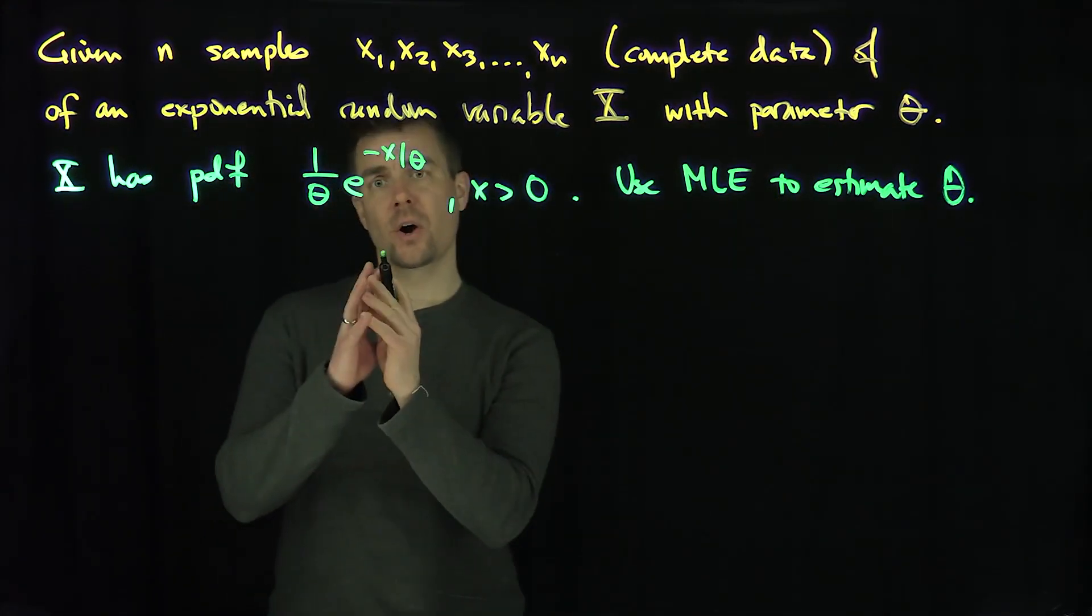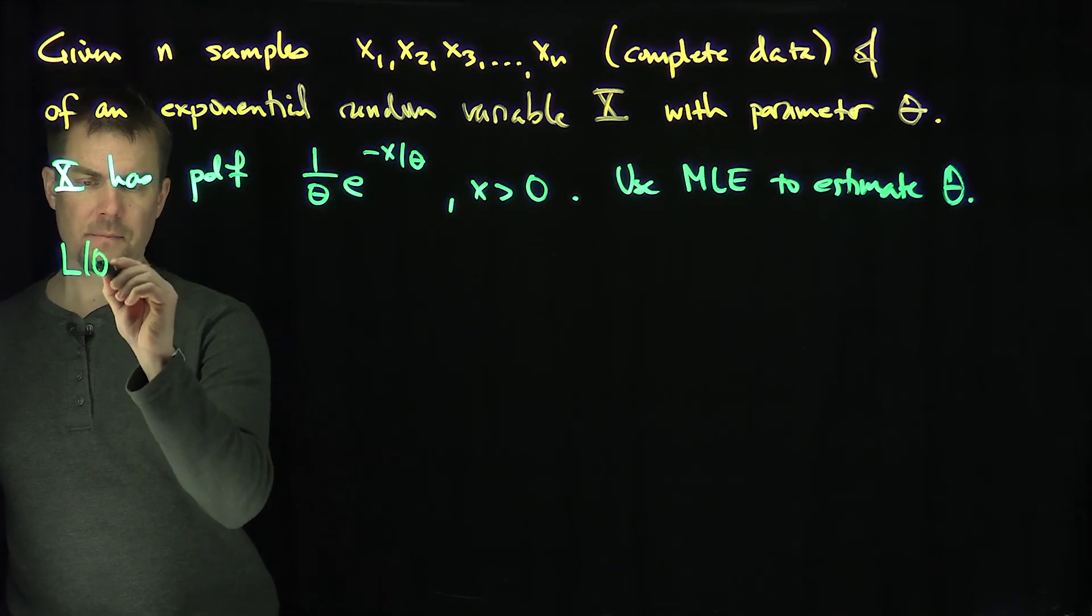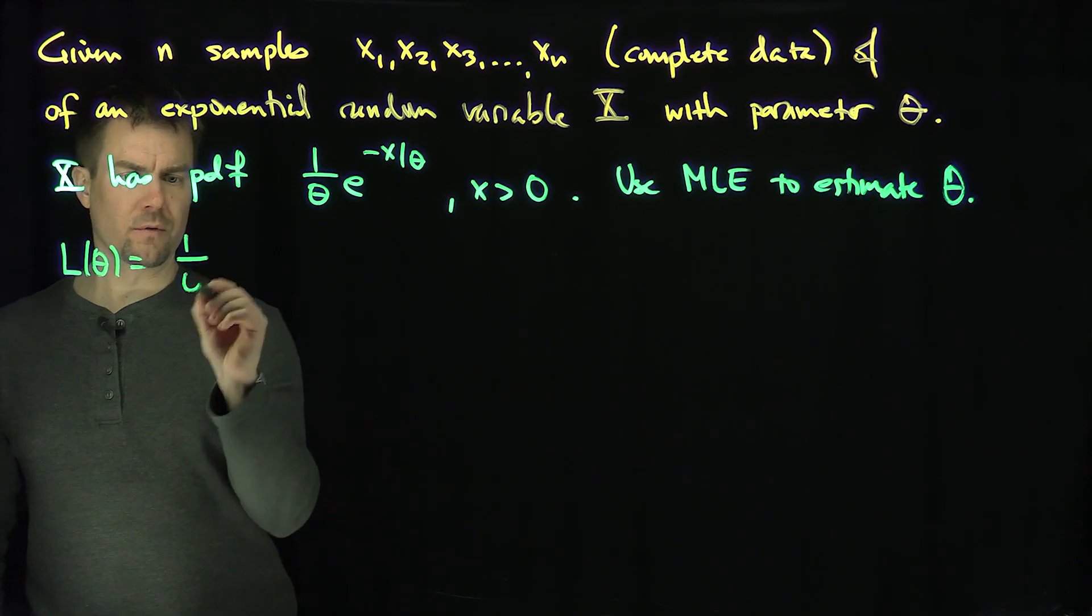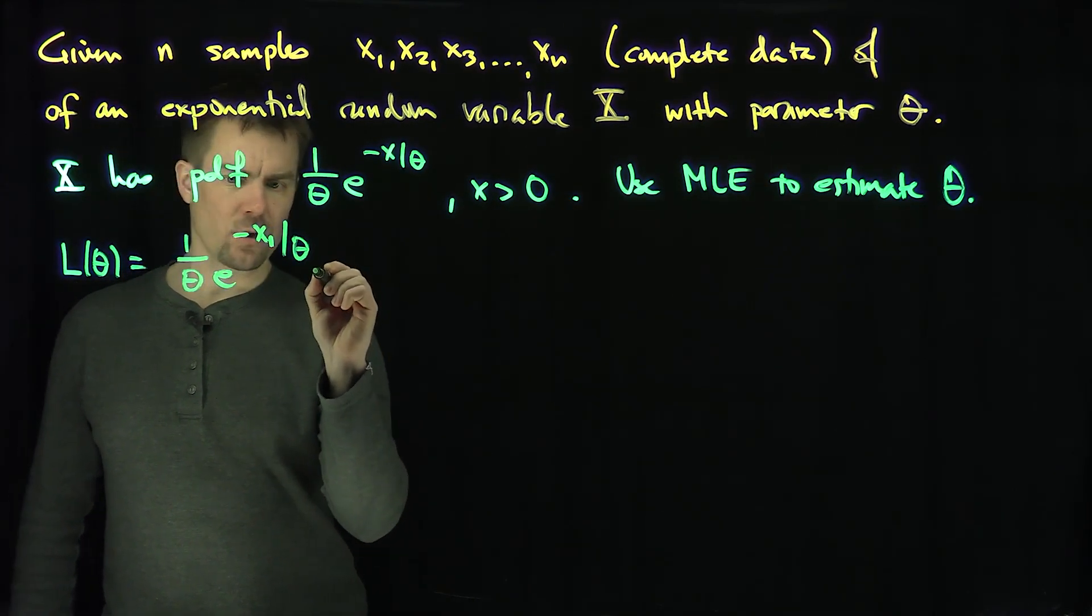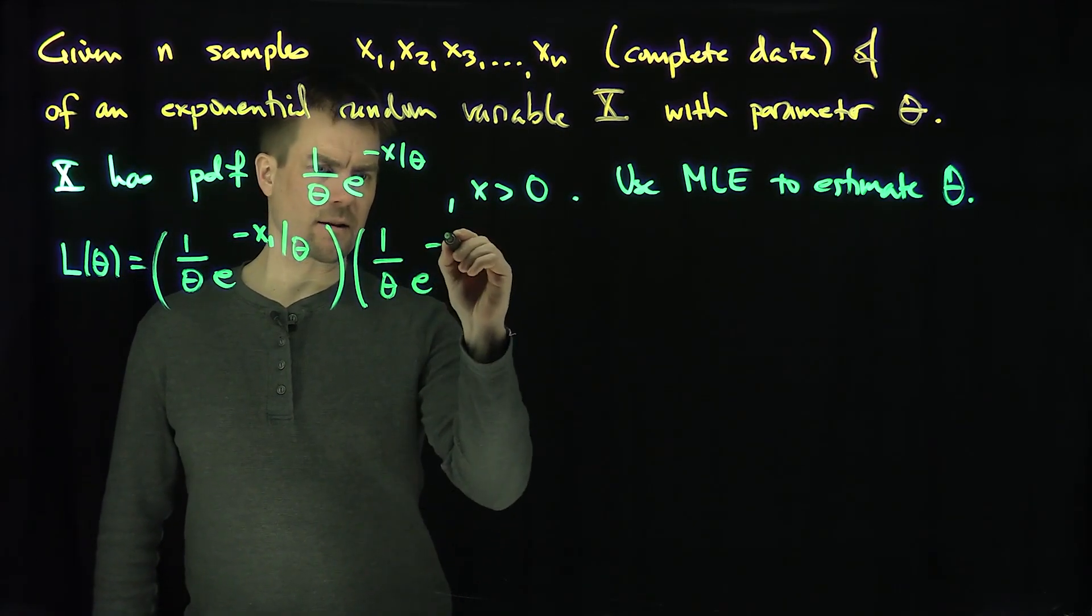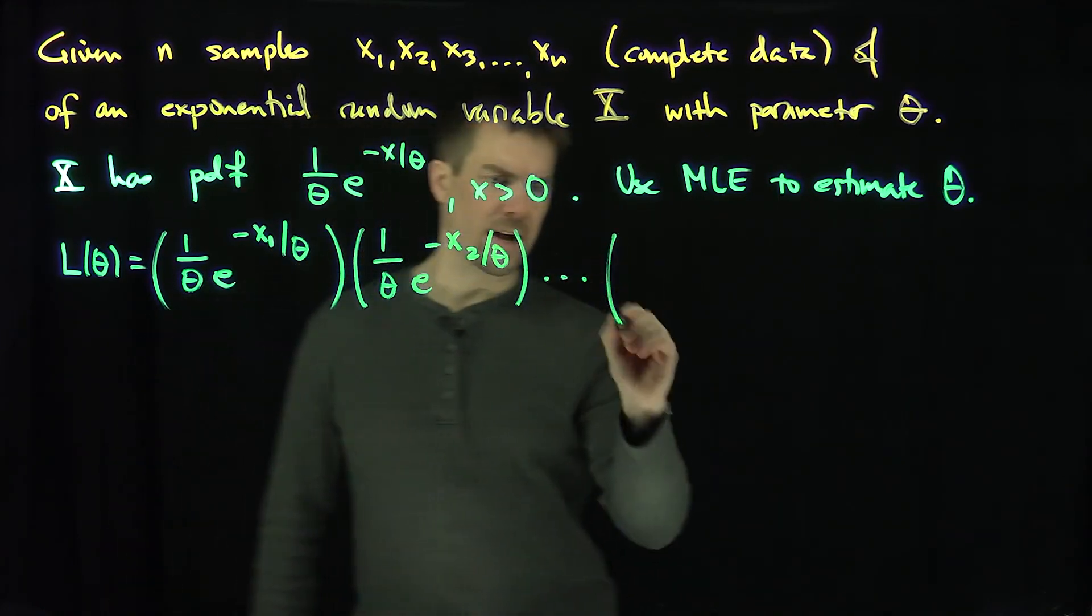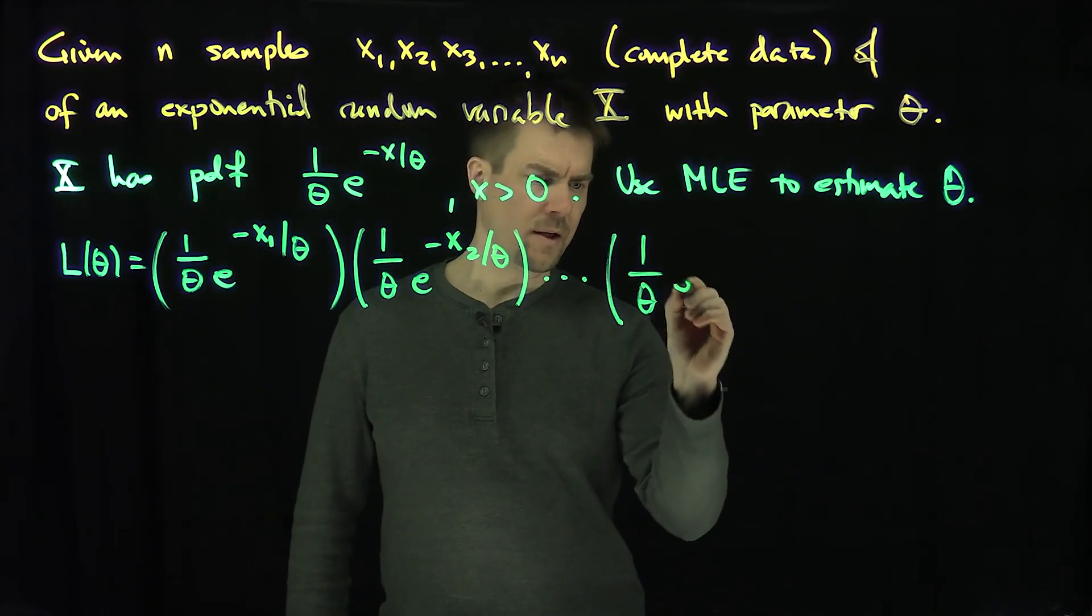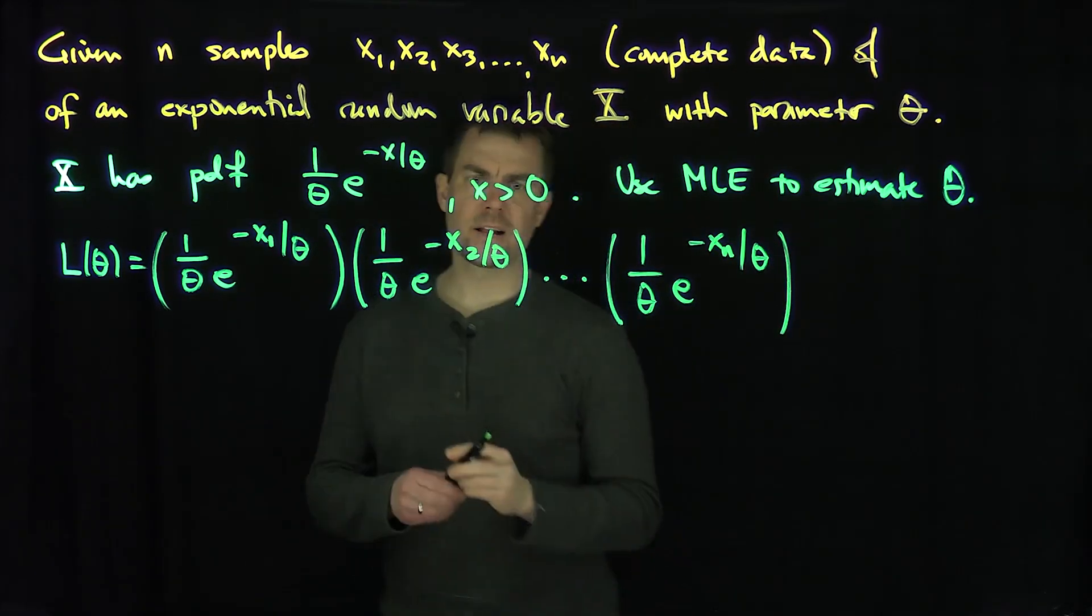So I have the PDFs. I find the likelihood function by multiplying the PDFs. So my likelihood function L of theta is just going to be 1 over theta e to the negative x1 over theta, times all the way down 1 over theta e to the negative x2 over theta, all the way down to 1 over theta e to the negative xn over theta. That's my likelihood function.